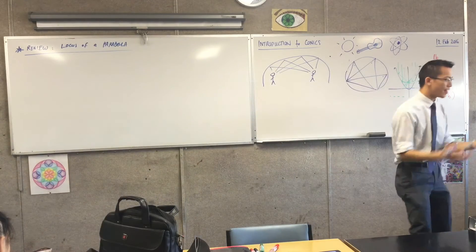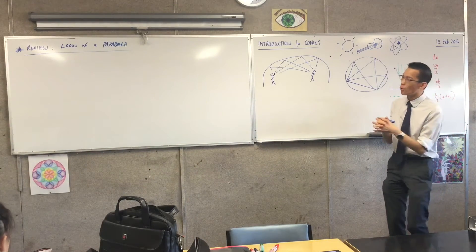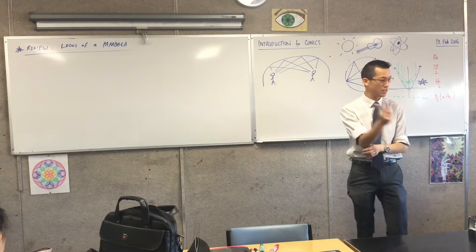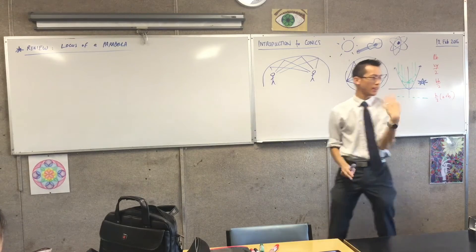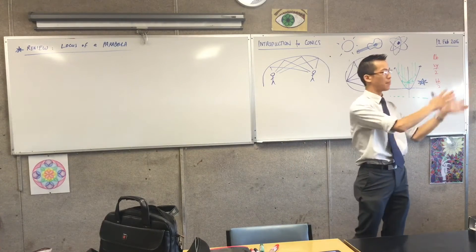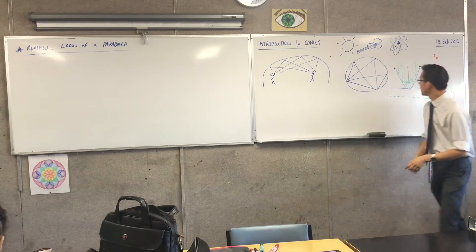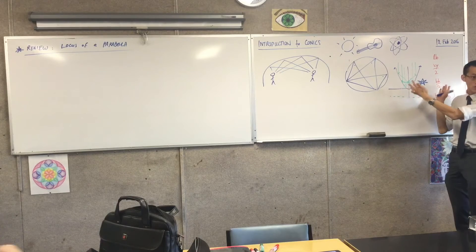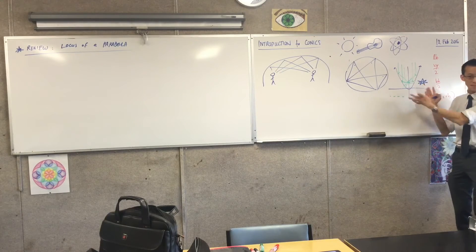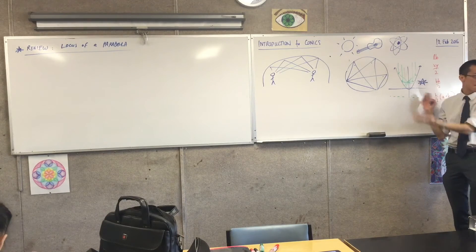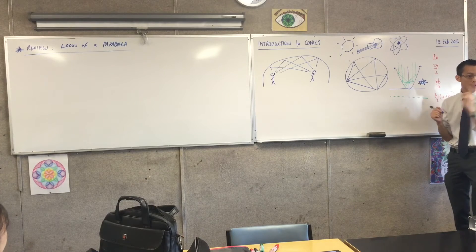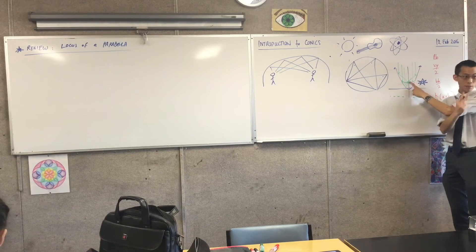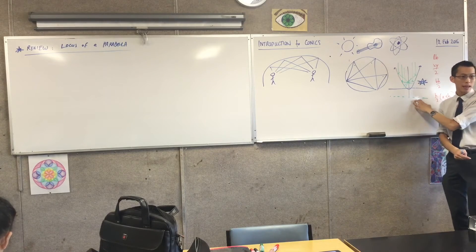The locus of a parabola we define with two pieces of information. Rather than giving me an equation of y equals x squared blah blah blah, we say give me - and you already talked about the two pieces of information when you described this phenomenon - what are the two geometric pieces of information that define a parabola? Number one, the focus, and number two, the directrix.